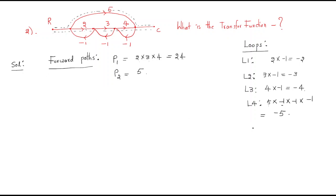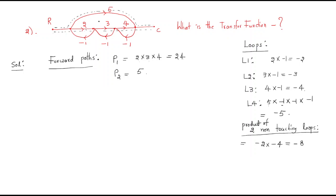Next, find the product of two non-touching loops. Observing the graph, L1 and L3 do not touch each other, so they form a non-touching loop pair. The product of L1 and L3 = (−2)×(−4) = 8. All other loop pairs touch each other.